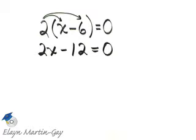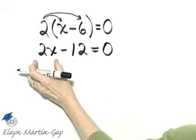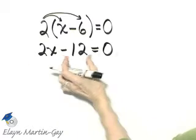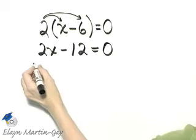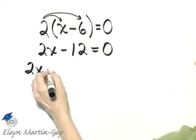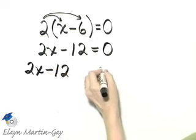And now we want to isolate the variable term 2x. To get this term by itself, I will add 12 to both sides of the equation by the addition property. So I will rewrite this equation. Leave some space.